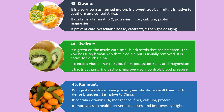Number 44. Kiwi fruit. It is green on the inside with small black seeds that can be eaten. The kiwi has furry brown skin that is edible but is usually removed. It is native to south China. It contains vitamin A, B12, E, B6, fiber, potassium, calcium and magnesium. It treats asthma, indigestion, improves vision, and controls blood pressure.